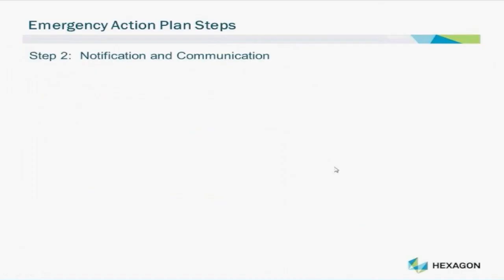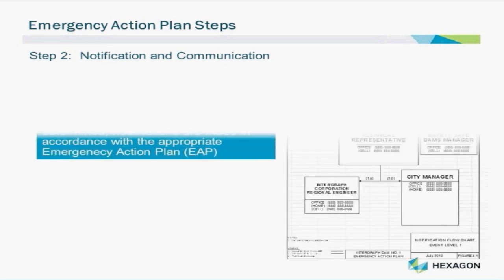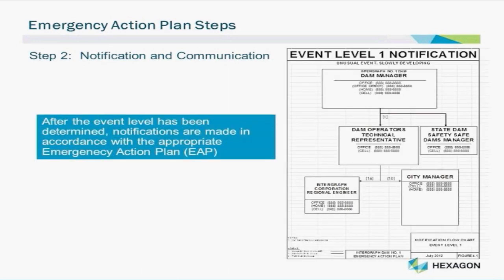Once the event has been classified, the next step is to notify all required personnel and agencies as specified in the Emergency Action Plan for the event type and level determined. The notification hierarchy determines who needs to be contacted in order of priority, and the notification plan contains the contact information for each role, allowing the dam manager to notify key people as soon as possible. Saving time in responding to emergencies is very important, so it is important that all dam managers keep their EAPs up to date with the latest contact information.